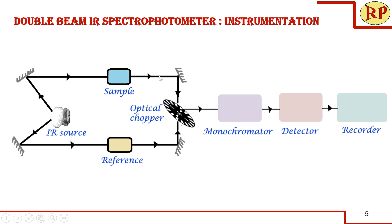The light coming out of the sample and the reference enters the optical chopper, which is a motor-driven rotating disc. There are white and black portions on this chopper — the white portions are open parts where light can pass through, while the black portions reflect the light instead of transmitting it. When rotating, when the light from the sample hits the white portion, the light from the reference will hit the black portion. That is, when the sample beam is transmitted, the reference beam is reflected, and vice versa. This way, the optical chopper alternately focuses light from the sample and reference into the monochromator.